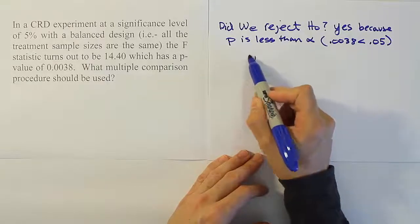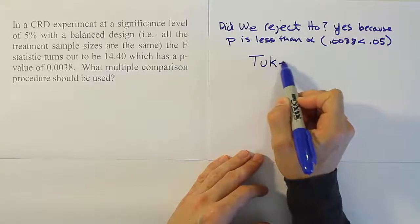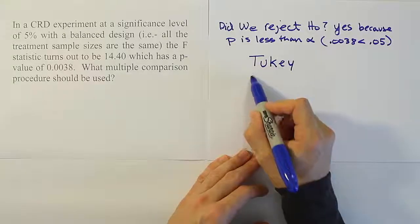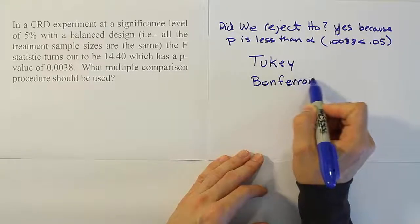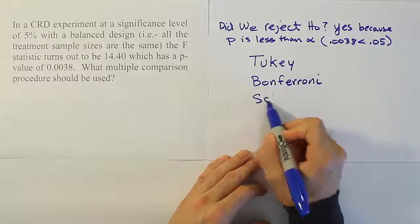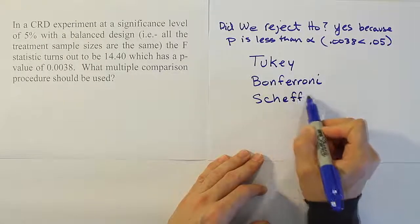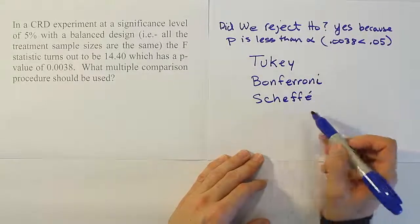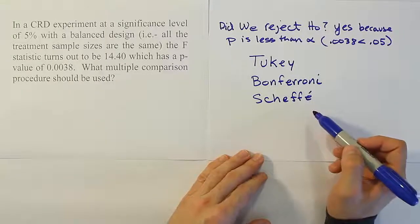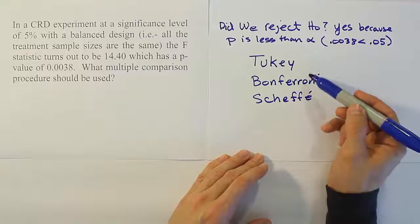Now the choices we have in elementary stats is typically Tukey, a guy's method called Bonferroni, and then another method named after the mathematician who invented it, Scheffé. So each of these are the names of mathematicians or statisticians who invented the technique, and I've put them in this order for a reason.